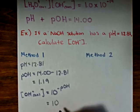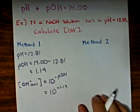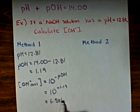In this case, that will be equal to 10 raised to the exponent of the negative 1.19, which gives us a hydroxide ion concentration of 6.5 times 10 to the negative 2 moles per liter.